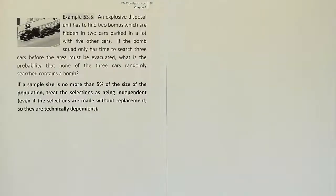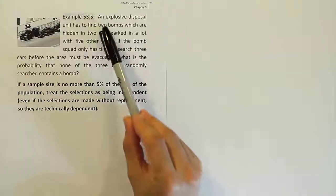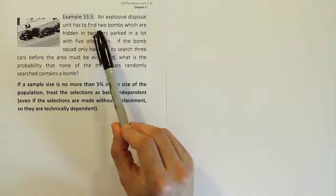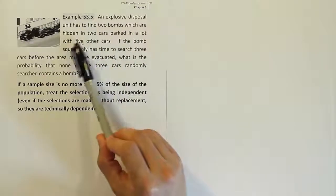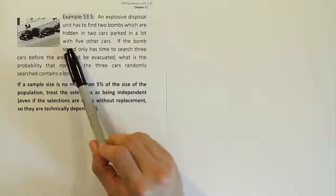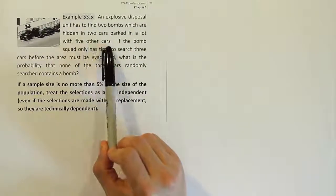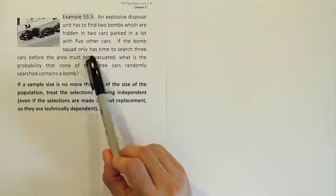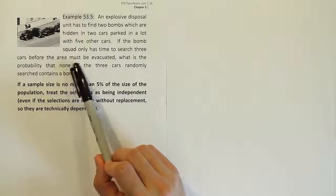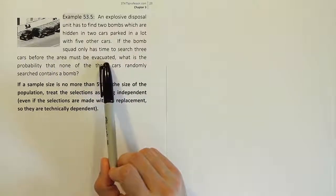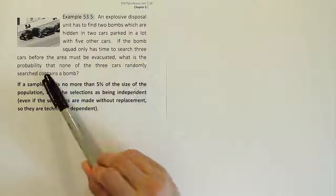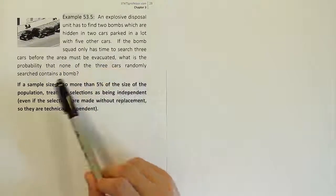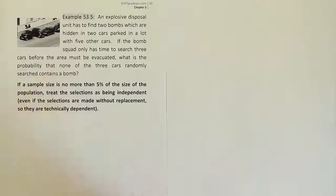Example 53.5. An explosive disposal unit has to find two bombs which are hidden in two cars parked in a lot of five other cars. If the bomb squad only has time to search three cars before the area must be evacuated, what is the probability that none of the three cars randomly searched contains a bomb?